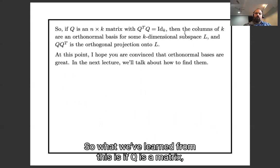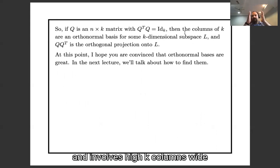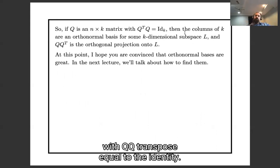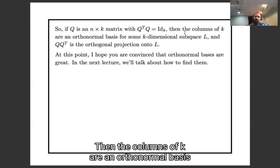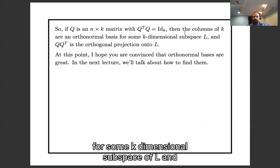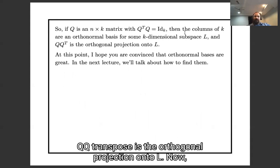So what we've learned from this is if Q is a matrix and rows high, k columns wide, with Q Q transpose equal to the identity, then the columns of k are an orthonormal basis for some k-dimensional subspace of L, and Q Q transpose is the orthogonal projection onto L.